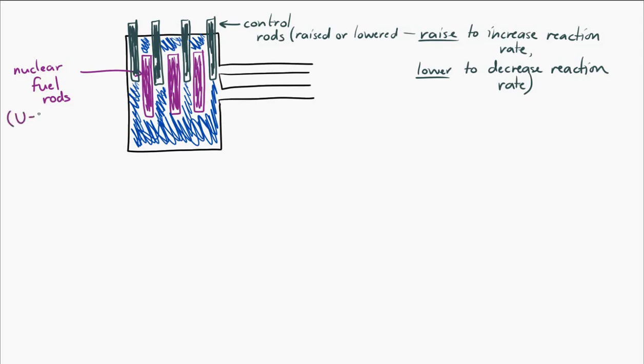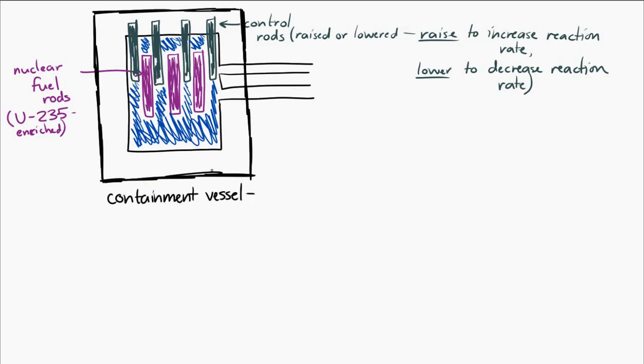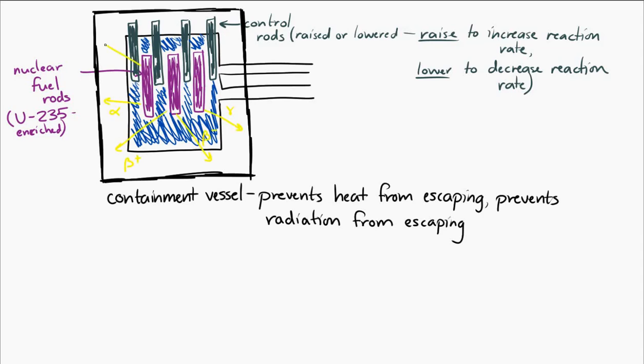This is all contained in a strong containment vessel. And the strong containment vessel has multiple purposes. One purpose is to prevent heat from escaping. And another big purpose is to prevent radiation from escaping, because these fission reactions are producing lots and lots of gamma rays and other types of radiation. Now, it's not perfect, but if it's concrete and it's very thick, also maybe lead, it can prevent much of the radiation from escaping the container.